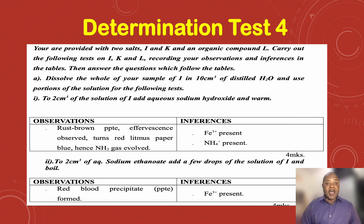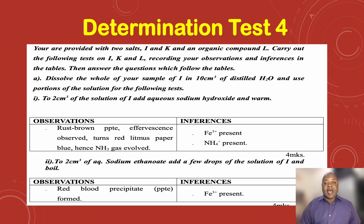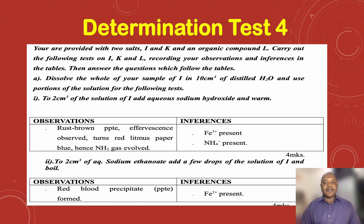I observed a rust brown precipitate and effervescence. On litmus paper, it turned blue litmus red, and ammonia gas was also evolved. Under my inference section, after comparing with the booklet, I saw that Fe³⁺ ion was present and ammonium ion was also present.